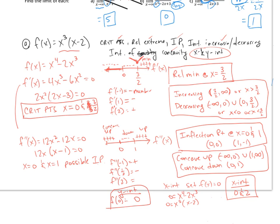It asks us to sketch a graph. It goes through (0, 0), and there's a relative minimum at x equals 3 over 2 — at 3 over 2, between 1 and 2, there's the relative minimum. I know it's concave down in one region and then turns concave back up, with an inflection point at x equals 0. So this is a quick possible sketch based on all the information.